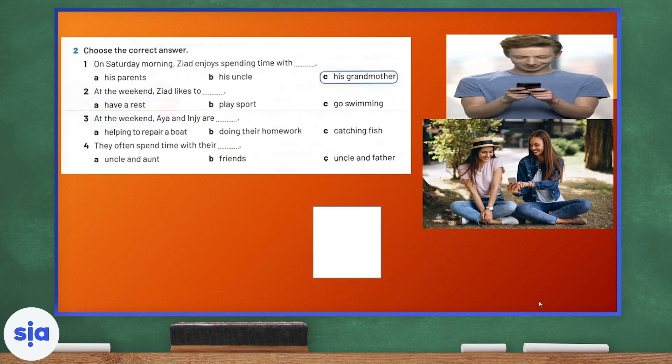Choose the correct answer. On Saturday morning, Zied enjoys spending time with, of course, his grandparents. At the weekend, Zied likes to have a rest, play sports or go swimming. Of course, Zied likes going to have a rest. Number three, at the weekend, Aya and Inji are helping to repair a boat, doing their homework or catching fish. They are doing their homework. They often spend time with their uncle and aunt, friends or uncle and father. Of course, the answer is C, uncle and father. Good job, guys.